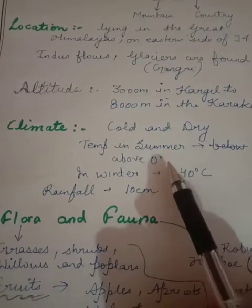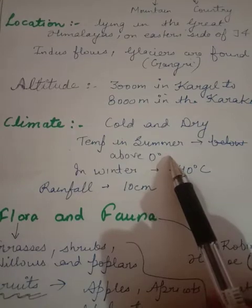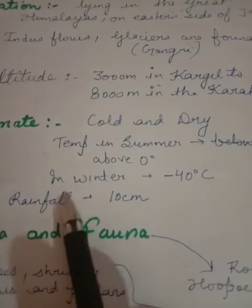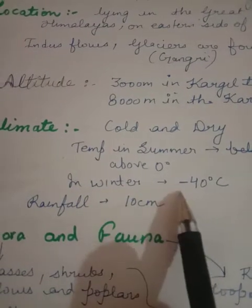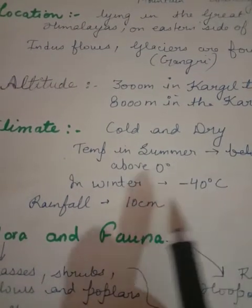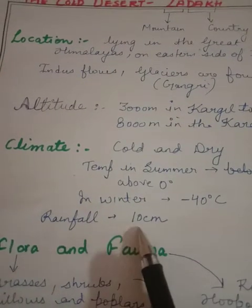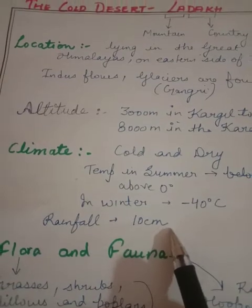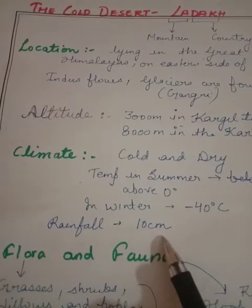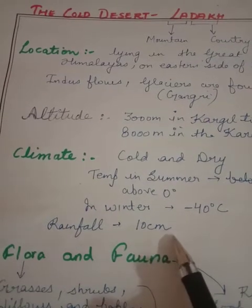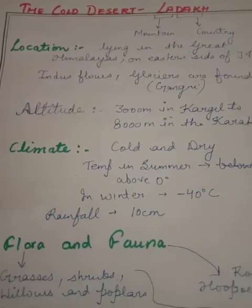In winter nights, the temperature falls below zero, reaching minus 30 degrees Celsius. You can imagine that if summer temperatures are so low, in winter the temperature remains minus 40 degrees Celsius for most of the time. Being a desert area, rainfall is only 10 centimeters. That's why it is known as a cold desert, characterized by low rainfall, scanty vegetation, and a dry region.